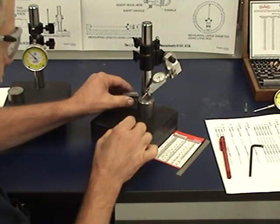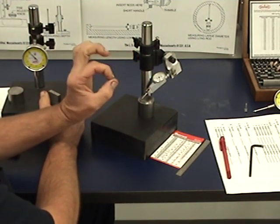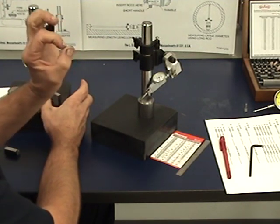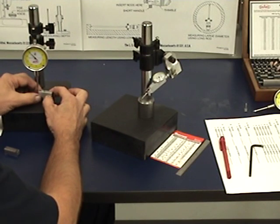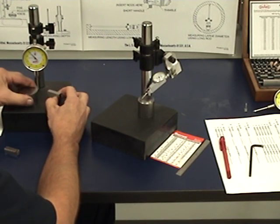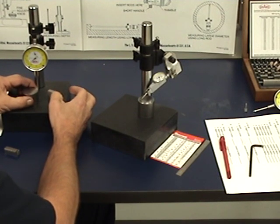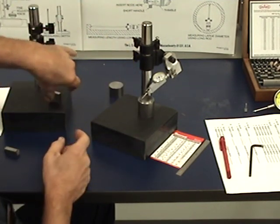But the key is to remember that a dial and a test indicator, they don't give you a measurement. What they do, they tell the difference between a standard, a constant, and your practice part. Here is my gauge block, one inch. My part is up here. It's seventy-three thousandths bigger. So my part is one inch and seventy-three thousandths.